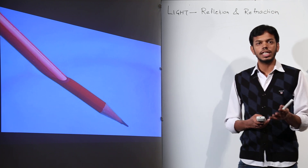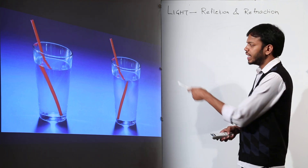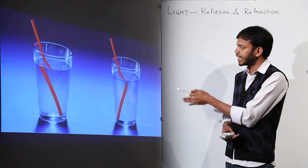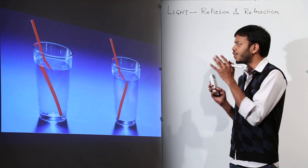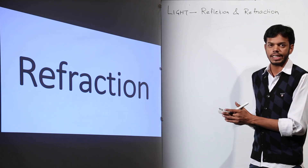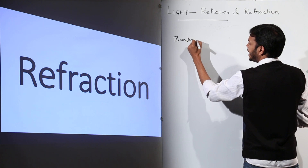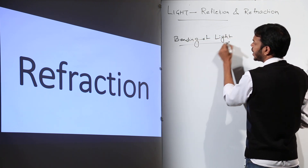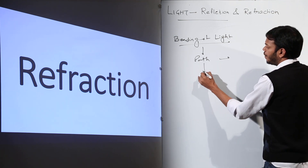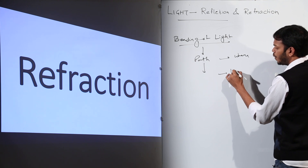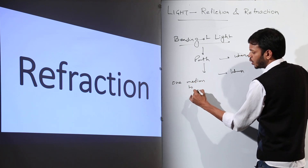If liquids of different densities are taken, the bending appears in different directions. So what is the phenomenon we are studying? Refraction is the phenomenon of bending of light from its path. This happens when light travels from one medium to another.